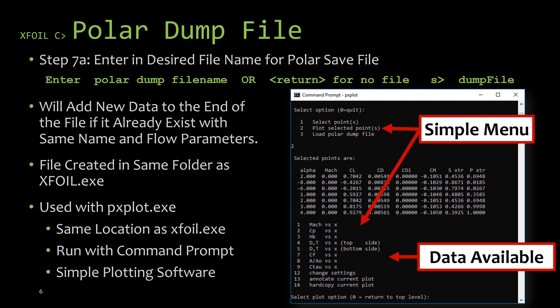Another difference is that the polar dump file saves a lot more of the data than the polar save file. As you can see here on the right it contains some similar information as the polar save file there. You see the angle of attack, you see some coefficient lifts and drags and moments, but it has some additional information. This screen by the way is taken from the pxplot.exe and if you look at some of the plots that it is able to create from just the polar dump file itself towards the bottom of that screen you'll see that it has the ability to create many different plots.